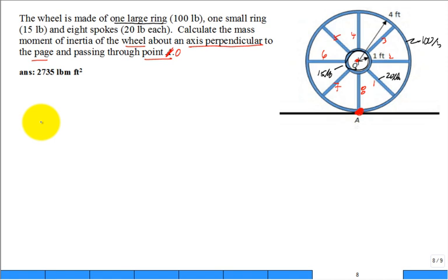Wouldn't it be, what is that ring, the inner ring? That would be I sub G, and so if I have a ring, it's at constant radius of one foot, isn't that just then the distance squared, one foot squared times the mass of the ring, 15 pounds?